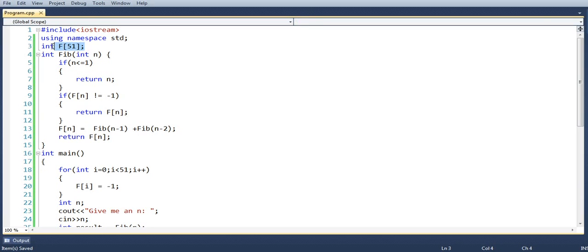Now we have declared this particular array in global scope so that only one copy of it is created and the same copy is accessible to all the calls of this method fib and method main as well. Now let us run this program and see what happens.